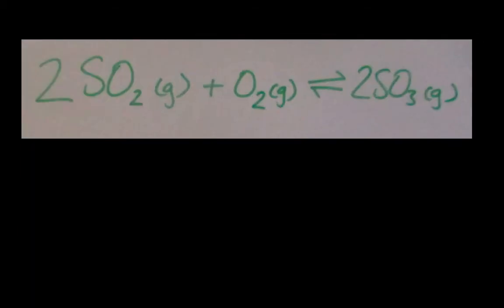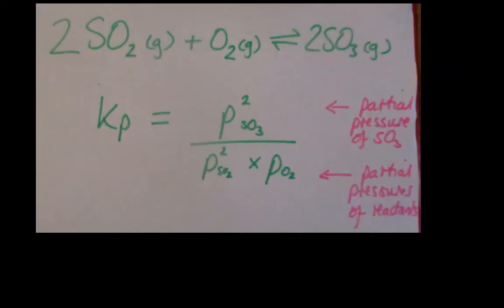Okay, so let's look at an example. Here we've got sulphur dioxide reacting with oxygen, and so we've got gases for products and reactants. In an analogous way to how we calculate Kc, for Kp, it's the partial pressure of the product divided by the product of the partial pressures of the reactants.